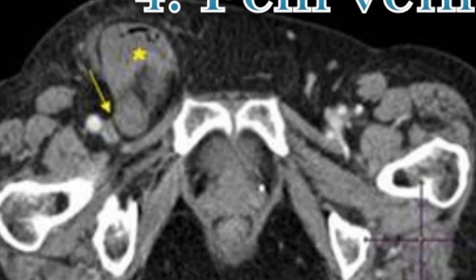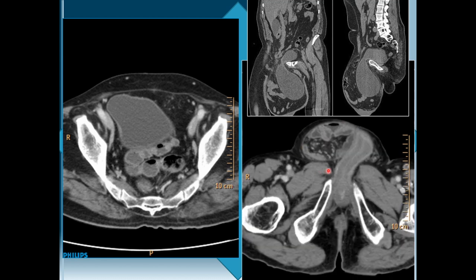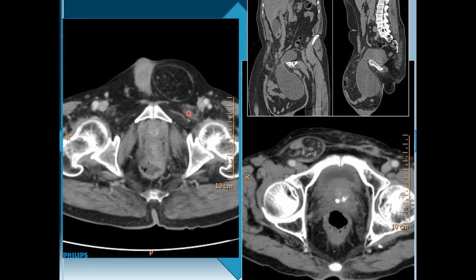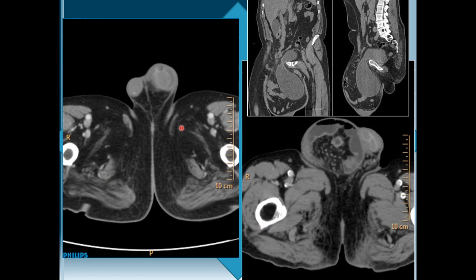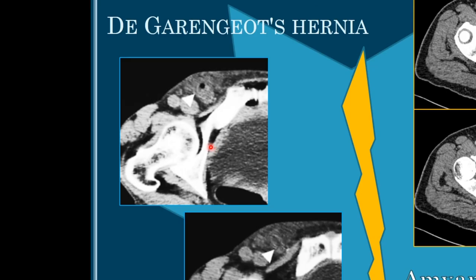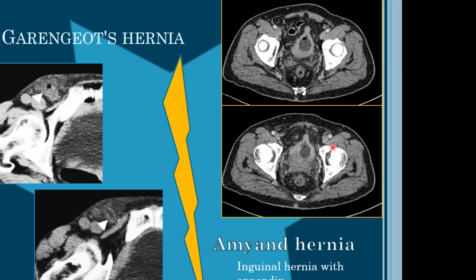Examples include right-sided inguinal hernia, left-sided large inguinal hernia, and an inguinal hernia with the bladder projecting within it. In a case of femoral hernia where the femoral vein is visualized, if the appendix lies within the femoral hernia sac, it is called Degeringot's hernia. If the appendix is within an inguinal hernia, it is called Amiens hernia.